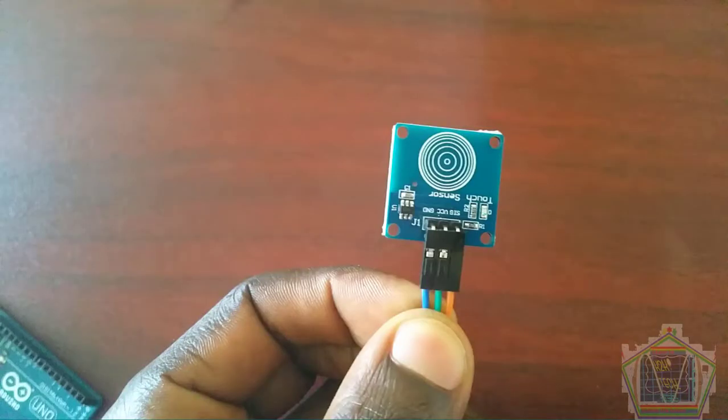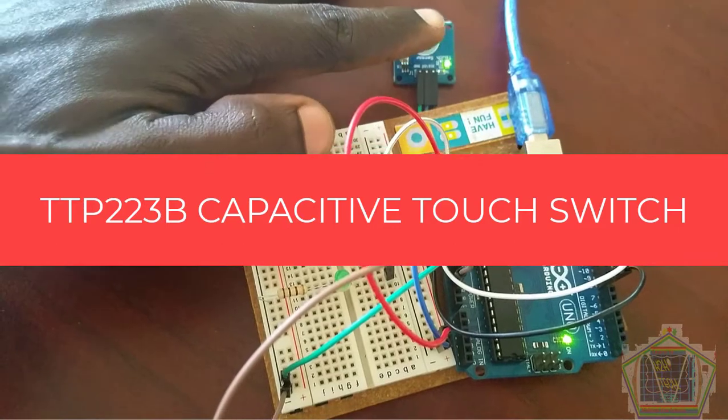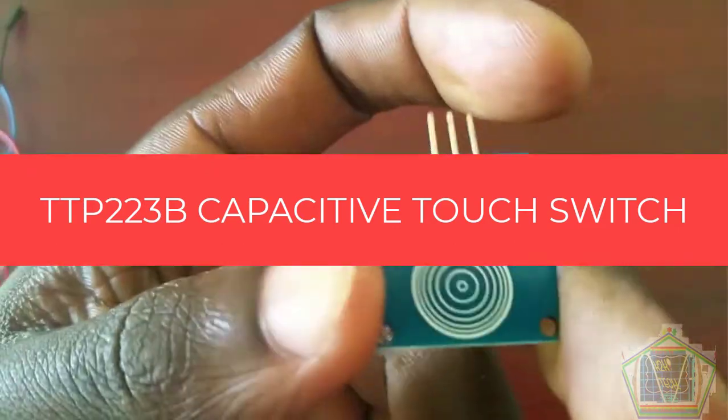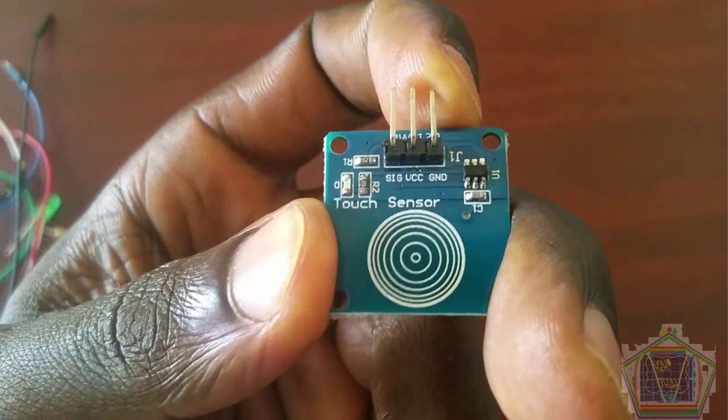This is the module itself. You see that it has three pins and it is called TTP223B capacitive touch switch. We are going to use it to interface with Arduino and toggle the LED.